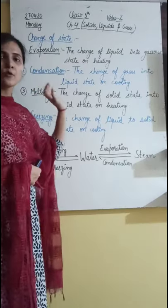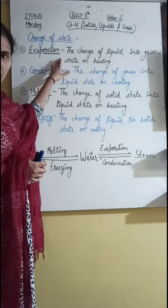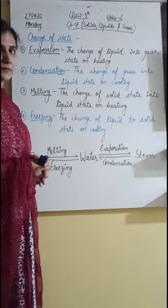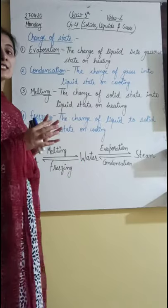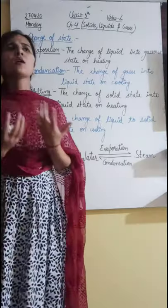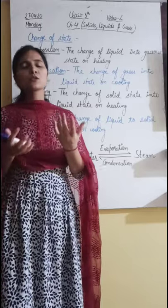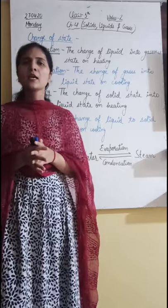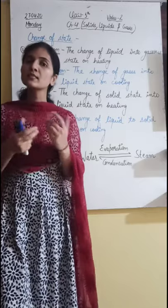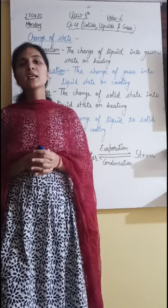The first term is evaporation. The change of liquid into gaseous state on heating is called evaporation. Evaporation is the change of liquids into gases. For example, water or any other kind of liquid like alcohol, salt solution, or sugar solution — when this liquid changes into the gaseous state, forming steam or water vapors, this change is known as evaporation.